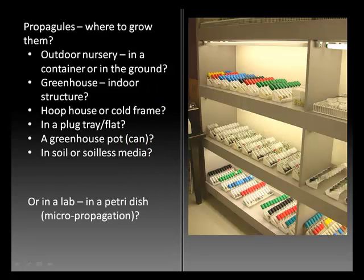A propagule is anything that can be used to develop a new plant. It could be a seed, a cutting, a clump of plants used for divisions, or clones that are dug up out of the ground and replanted. These propagules can be grown in an outdoor nursery either in a container or in the ground, in a greenhouse or some other indoor structure, a hoop house or cold frame.